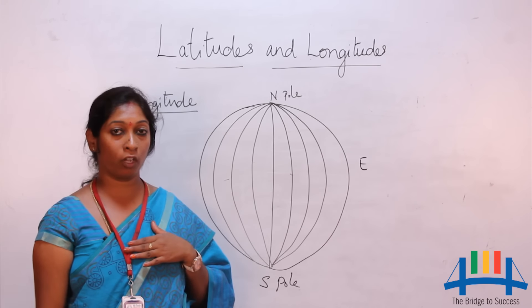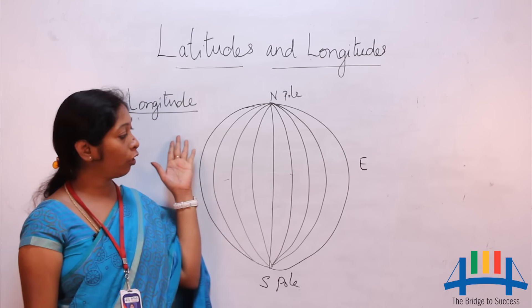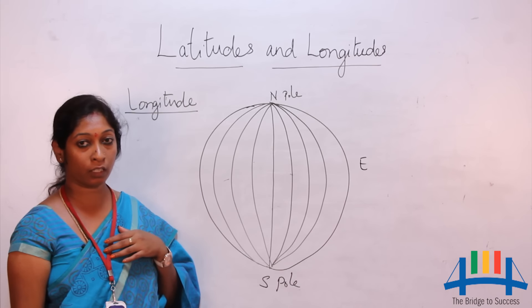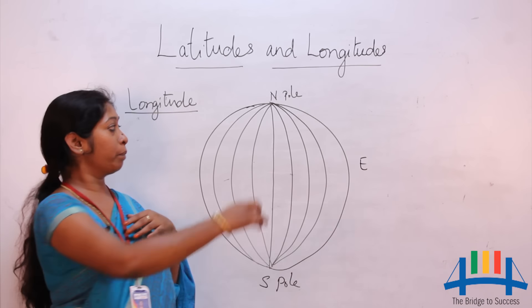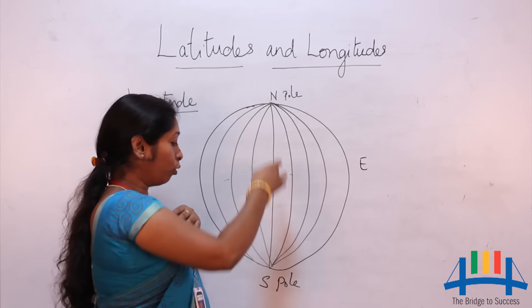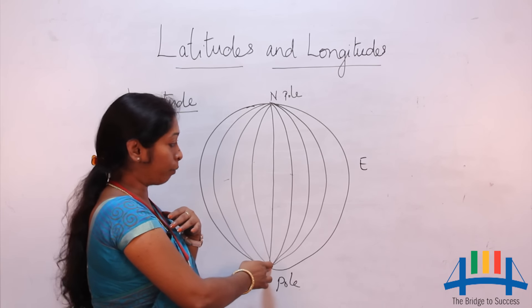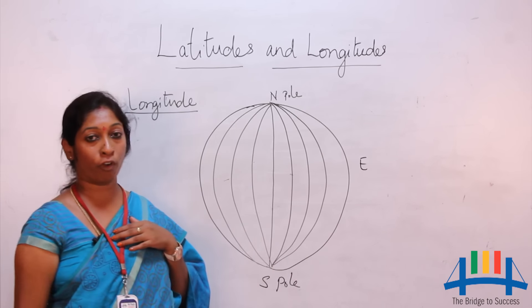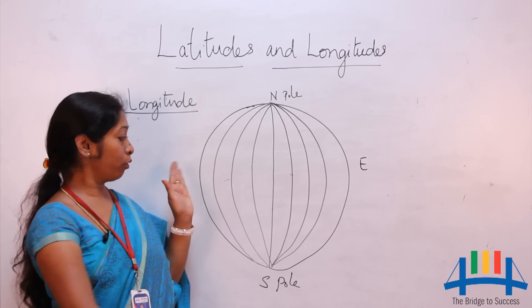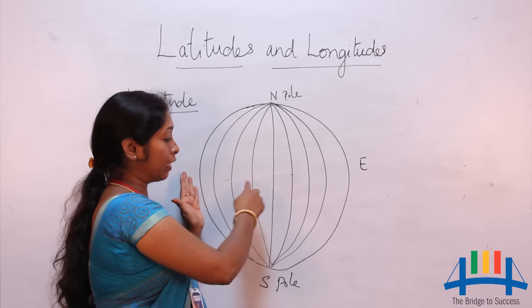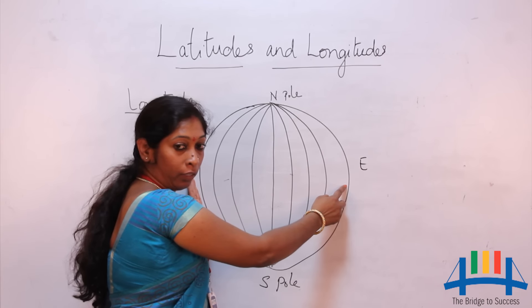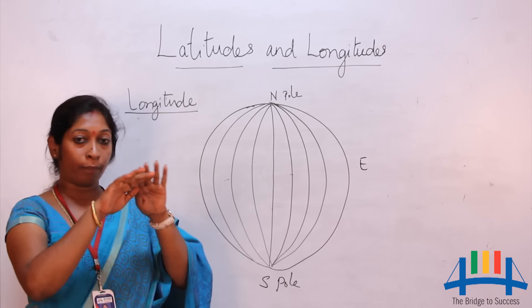Now let us learn about longitudes. Longitudes are measured in degrees. The lines which pass from north pole to south pole and join at the poles are called meridians of longitude. The distance between the longitudes is larger at the equator because the earth's shape is spherical.